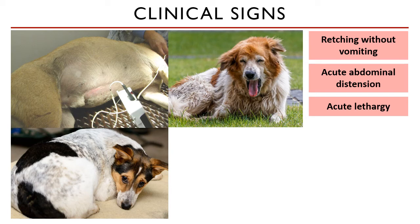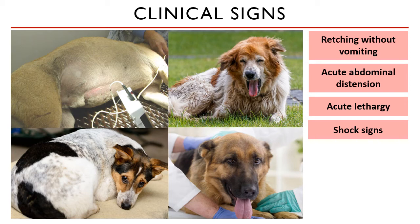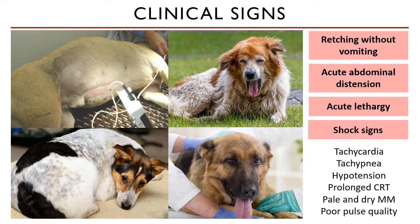One note is that giant breed dogs may not show classic abdominal distension, since a dilated stomach may remain within the dog's ribcage because it's so large. These clinical signs are usually followed by shock signs such as tachycardia, tachypnea, low systolic blood pressure, prolonged CRT, pale and dry mucous membranes, and poor pulse quality. Emphasis on pulse quality, not pulse rate — pulse quality is how resistant an artery is when you try to collapse it.